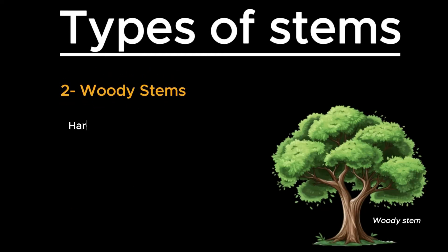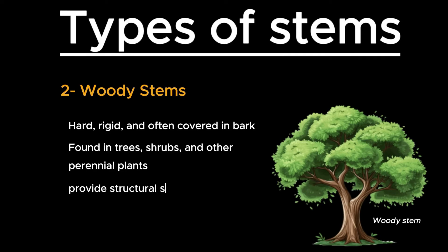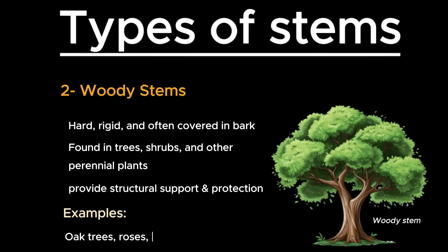Woody stems are hard, rigid, and often covered in bark. They are found in trees, shrubs, and other perennial plants. These stems provide structural support and protection. Examples include oak trees, roses, and pines.